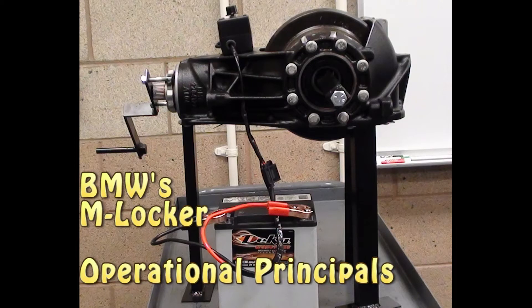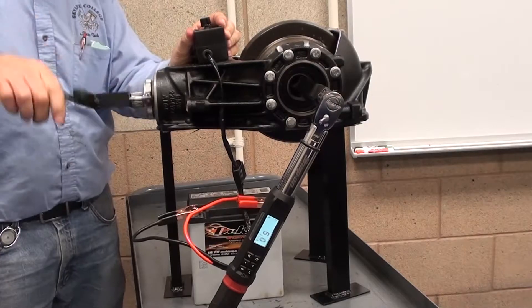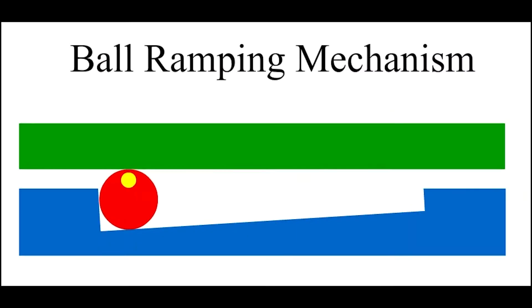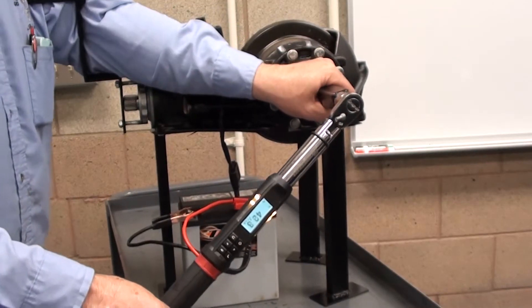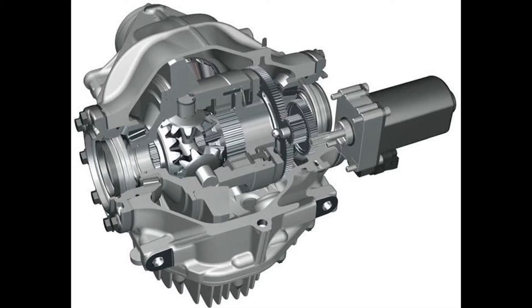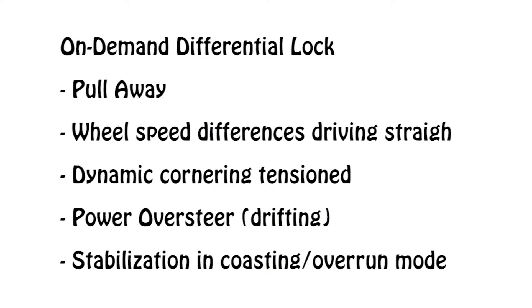BMW's M-Locker Operational Principles. The M Rear Axle Differential is a demand-controlled rear axle differential lock. It is used during pull-away or when there is a difference in wheel speed in the rear axle when the vehicle is driving straight ahead.